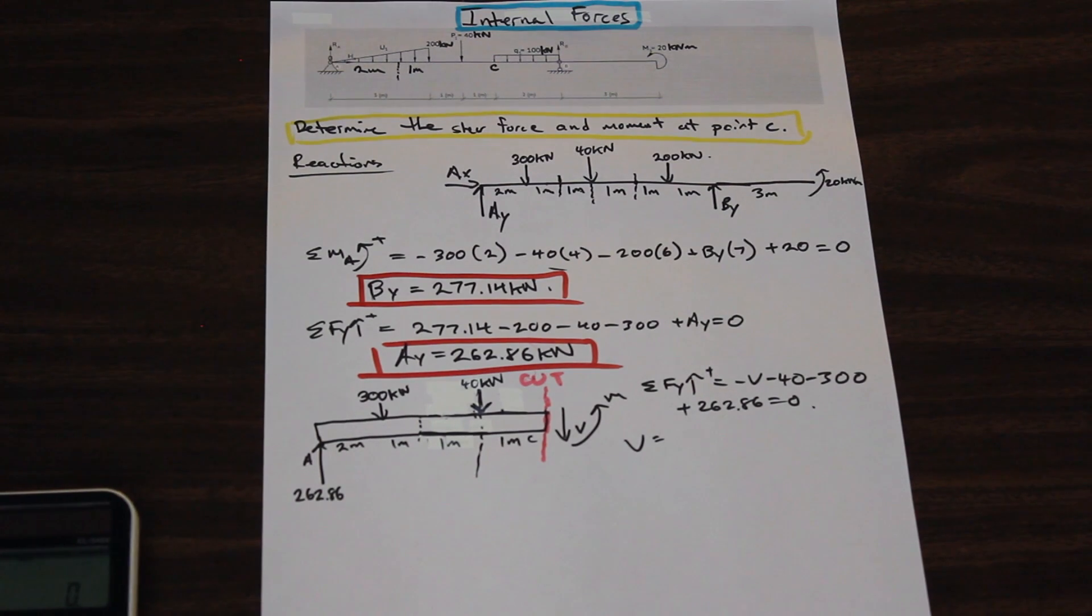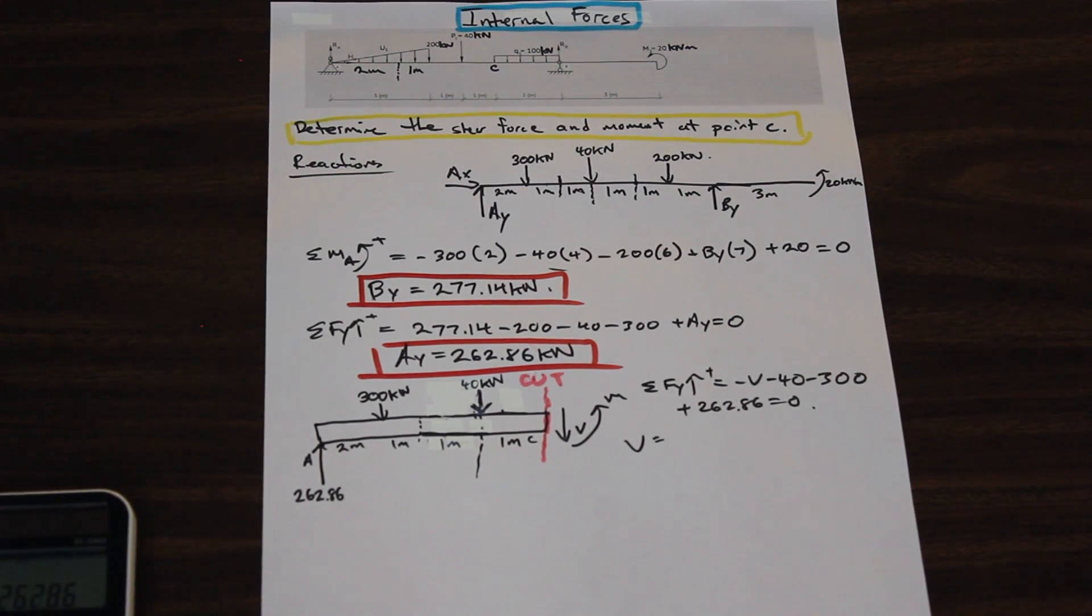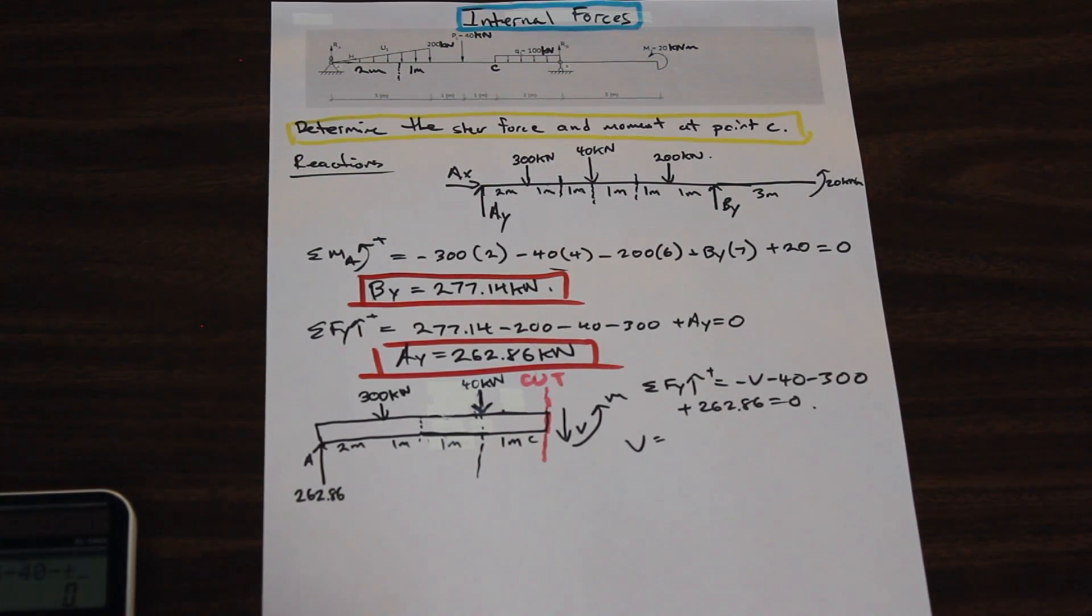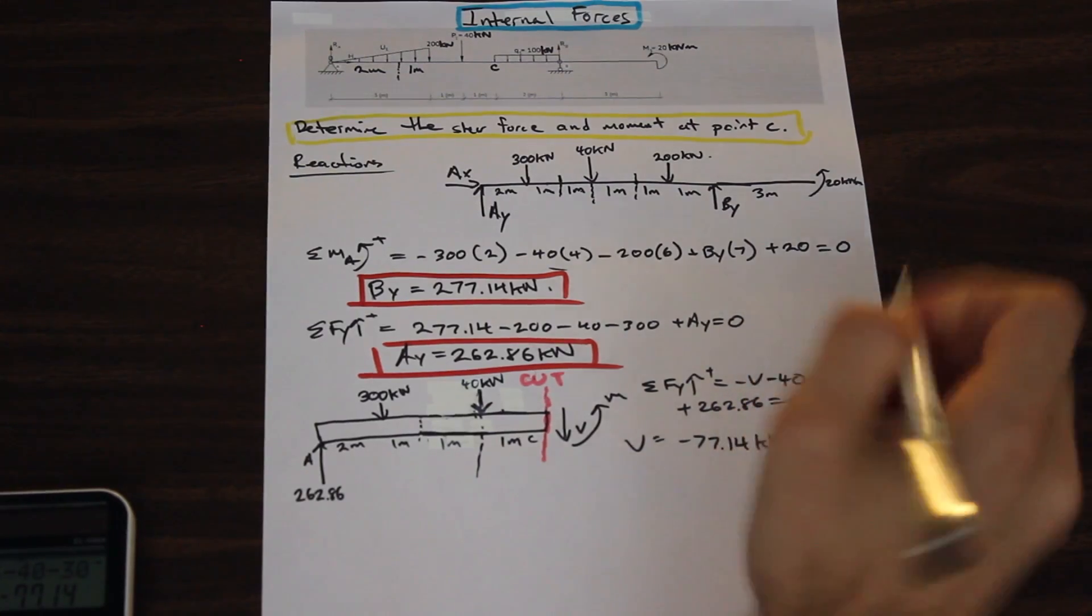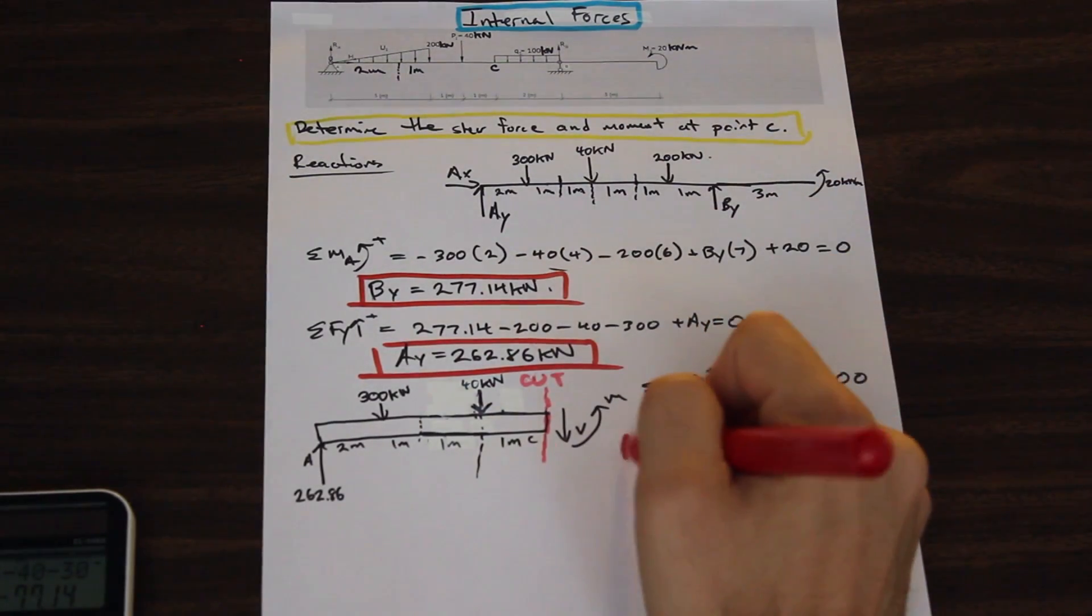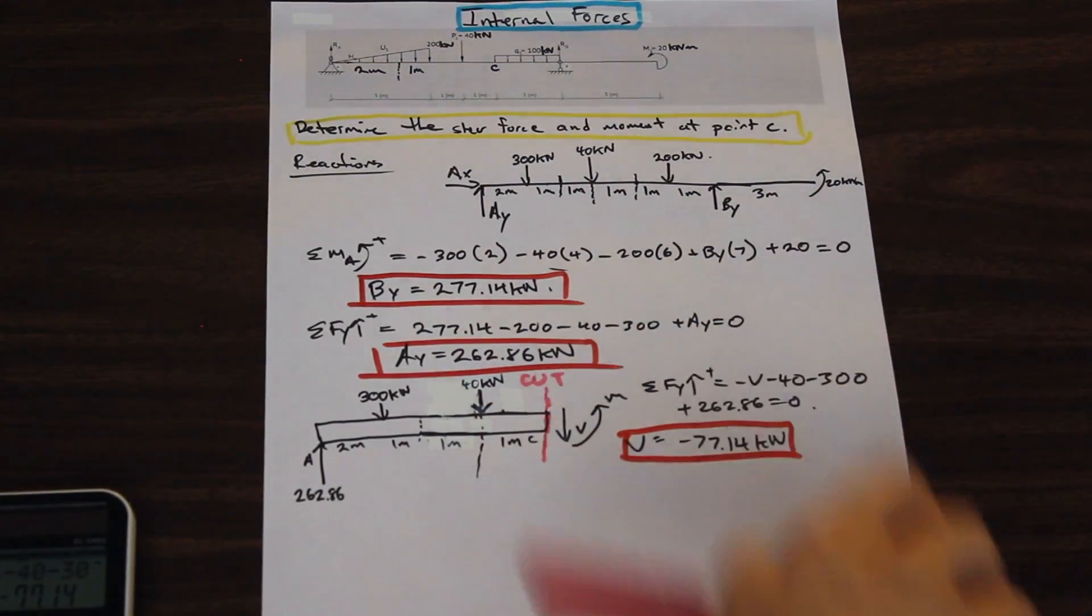V should be equal to negative 77.14. So that is the shear at that point. Great.